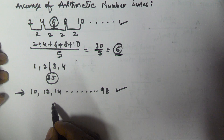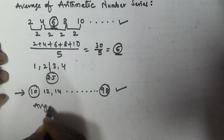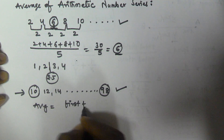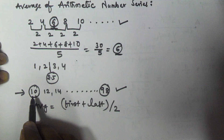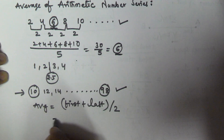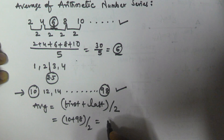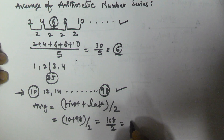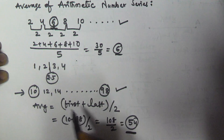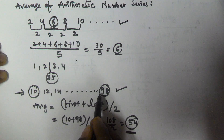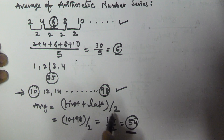When we are given an arithmetic series and we know the first number and last number, the average is equal to first plus last divided by 2. So the average of all the two-digit numbers which are divisible by 2 is going to be 10 plus 98 divided by 2, that is 108 divided by 2, which equals 54. When you know the first and last term in an arithmetic series, the average is first plus last divided by 2.